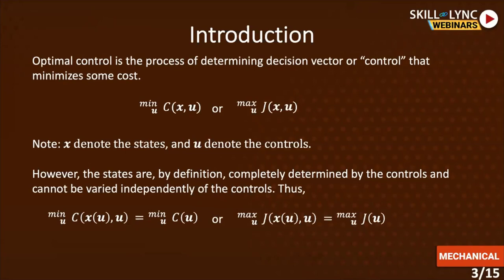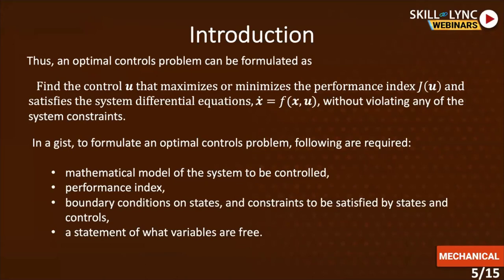It is very important that the relationship between the states and control is described and developed from physical laws. An optimal control problem can be formulated as: find the control u that maximizes or minimizes the performance index J and satisfies the system differential equations x-dot equals f, without violating any of the system constraints. To formulate an optimal controls problem, you require a mathematical model of the system to be controlled, a performance index, boundary conditions on states, and constraints to be satisfied by states and controls, and a statement of what variables are free. Once everything is well defined, you can structure the solution accordingly.